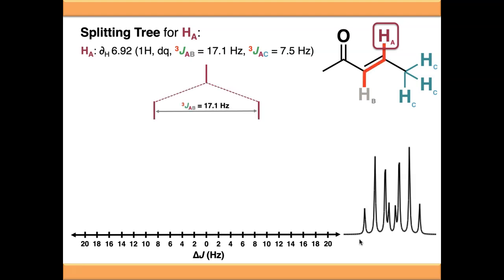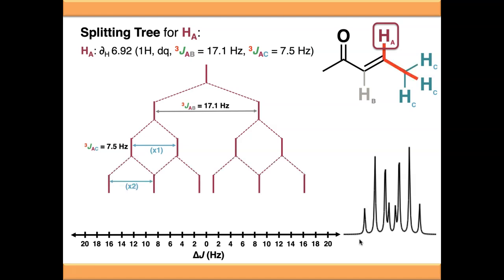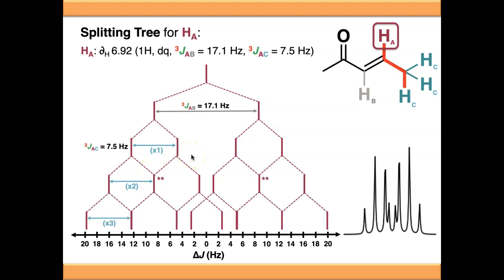Same principle as before. Let's start by coupling against HB - that's again a 17.1 Hz gap; I've kept all the J values the same for simplicity. And we're then going to couple against three HCs. So that's the first splitting, then we've got the second splitting, remembering that we're getting a signal that's twice as intense here. And then we're going to get a third splitting of these signals against the final HC.